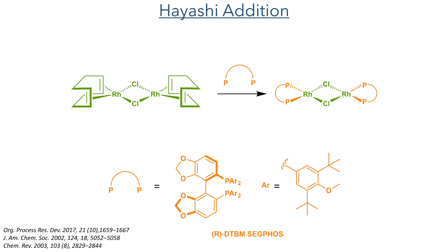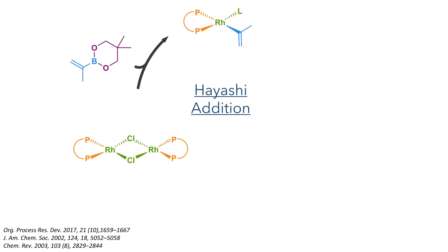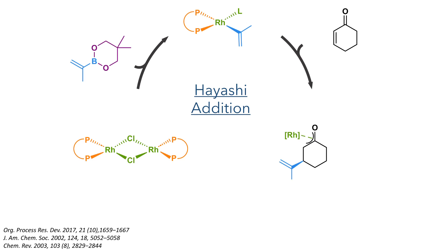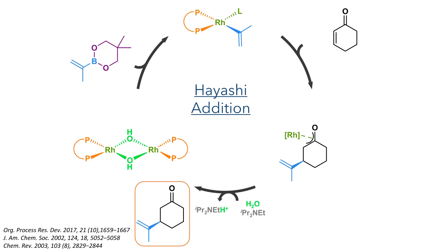The rhodium species is generated from cyclooctadiene rhodium chloride dimer. This reacts with a chiral ligand based upon the SEGPHOS motif, which displaces the labile COD ligand. It is this species that then reacts with the neopentylboronate, forming a rhodium-allyl complex. This adds the allyl group in a conjugate fashion to cyclohexenone, forming a rhodium-coordinated enolate species, which is then hydrolyzed by water to form the target product, while diisopropylethylamine deprotonates another equivalent of water, allowing for the formation of a hydroxo-bridged dirhodium species which continues the catalytic cycle.